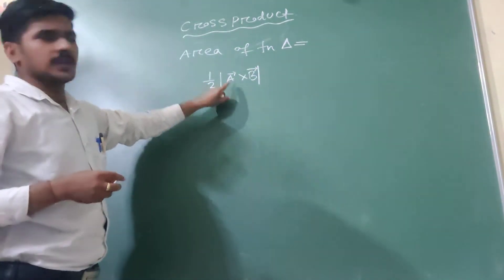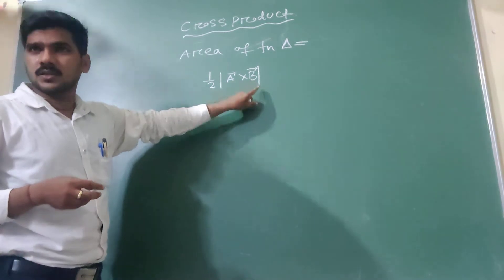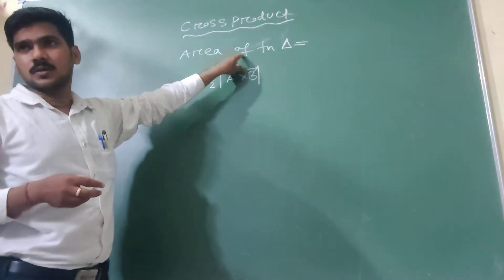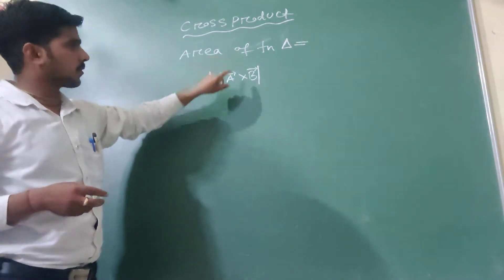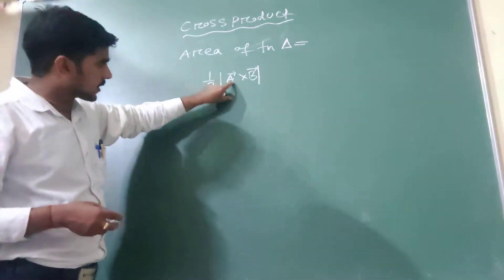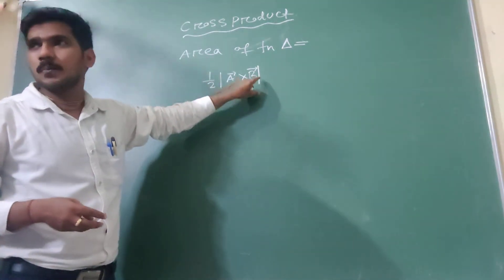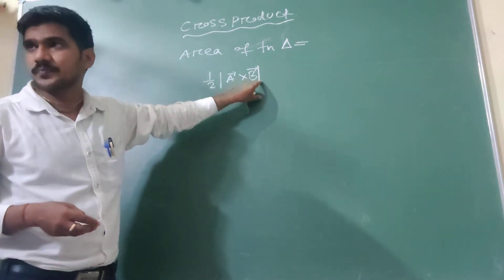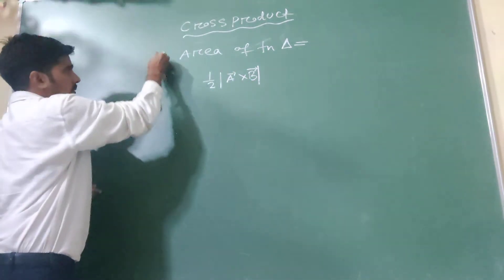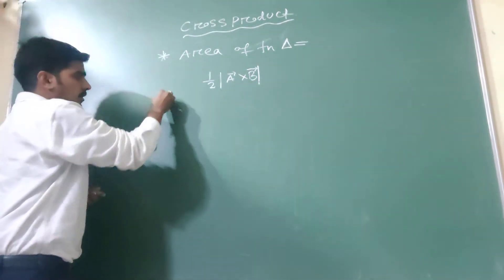So the formula for the area of the triangle is: half into A vector cross B vector. This is the formula.